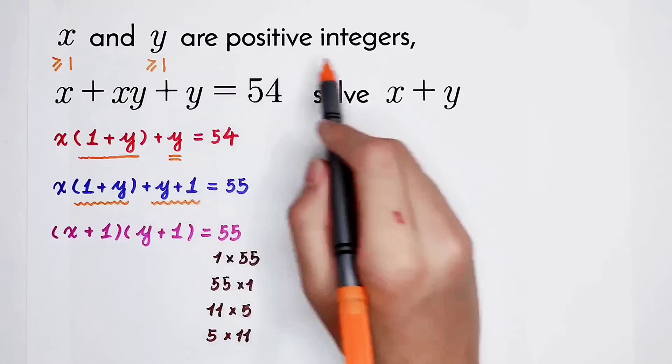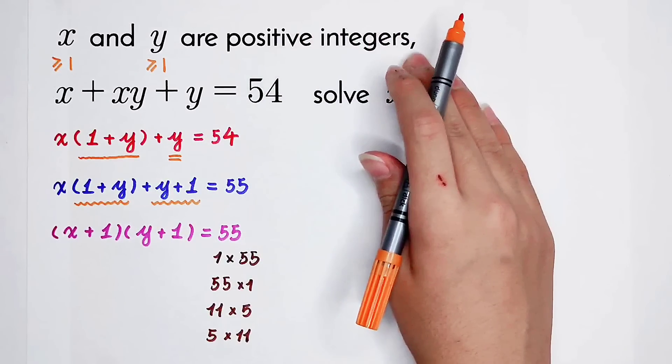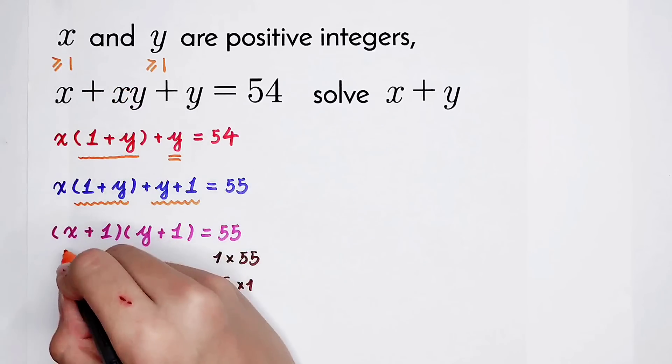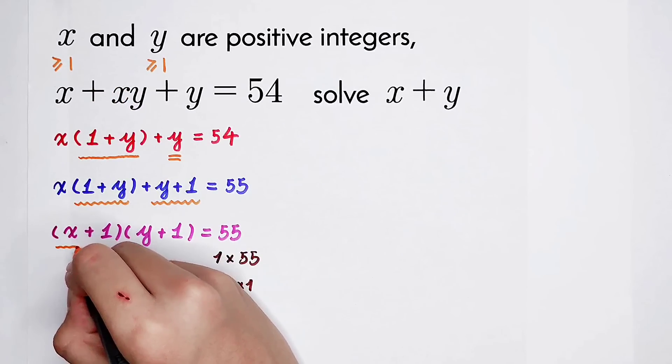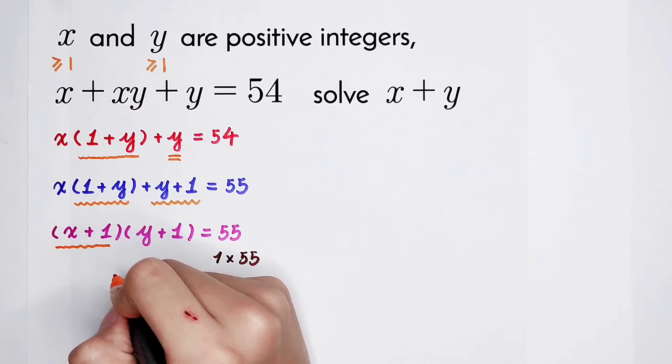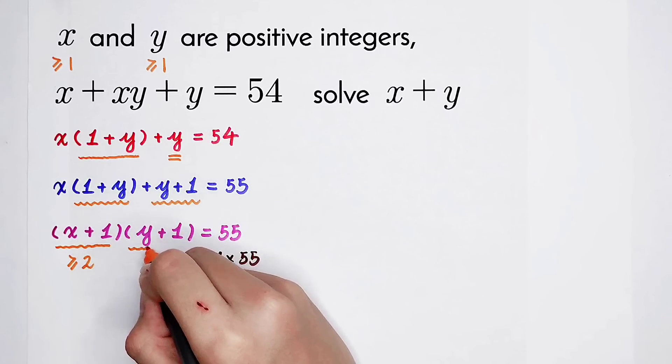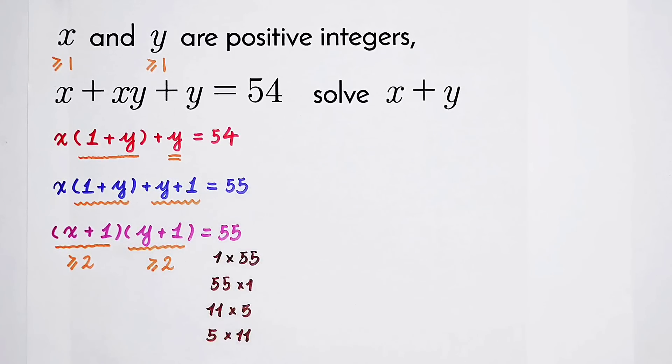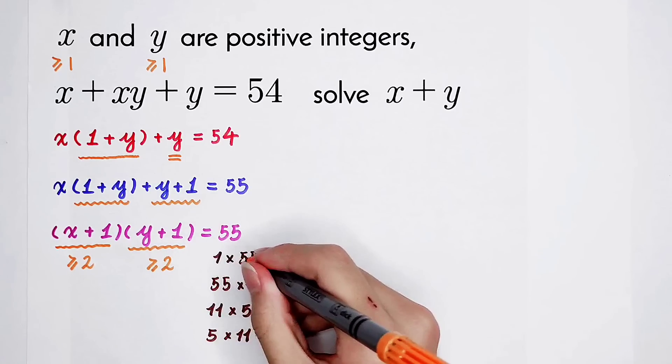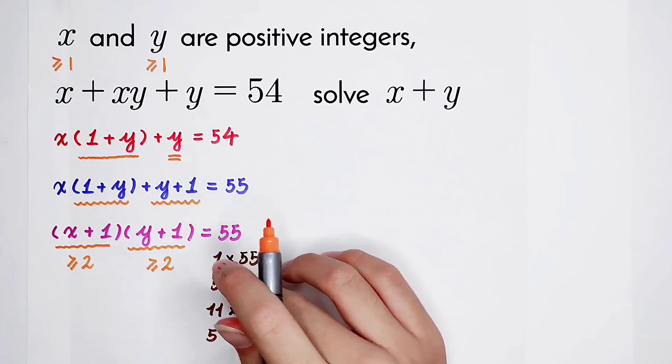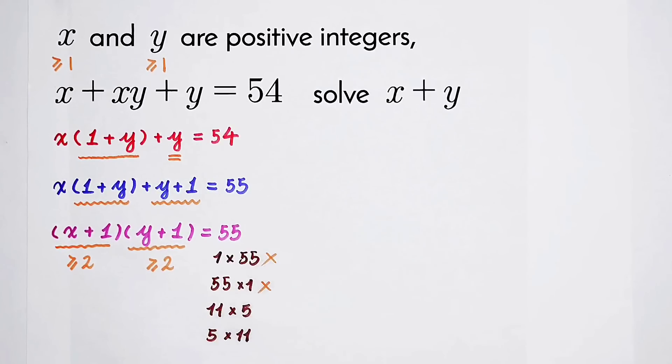From here, x and y are both integers and they both have to be greater than or equal to 1. And then x plus 1, it is also an integer and has to be greater than or equal to 2. Y plus 1, the same case. So 1 times 55 and x plus 1, cancel. And then 55 times 1, delete. There are only two cases left.